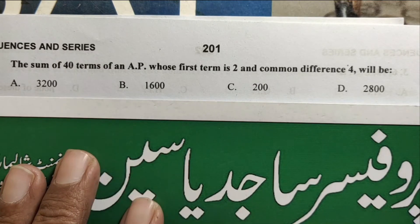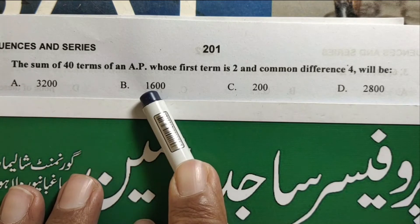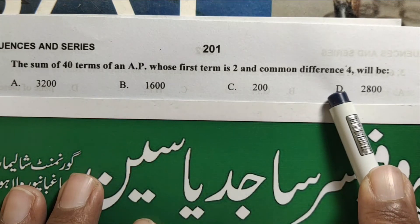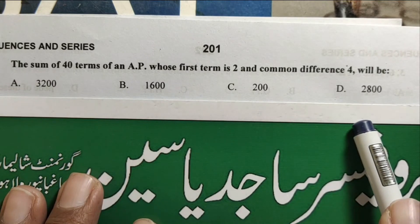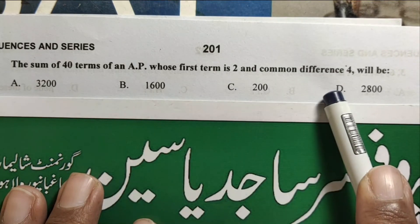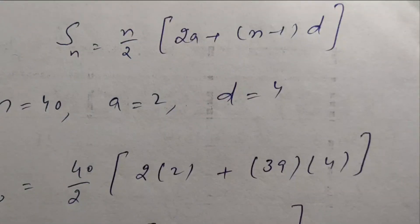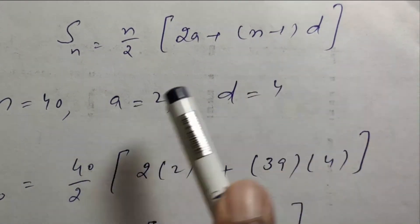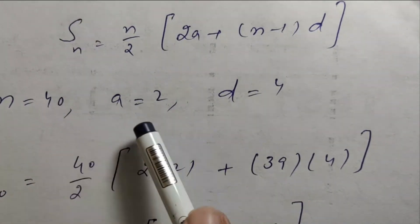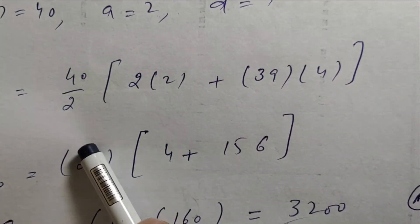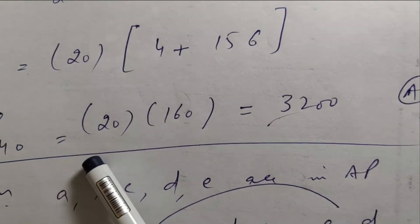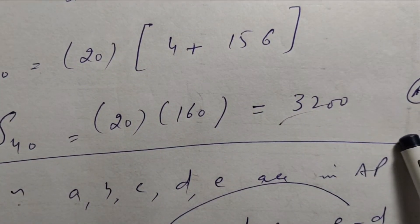The sum of 40 terms of an arithmetic progression whose first term is two and common difference is four. Using SN equals N by 2 into 2A plus N minus 1 into D: N equals 40, A equals two, D equals four. S40 equals 40 by 2 into 2 times 2 plus 39 times 4, which simplifies to 3200. Option A is correct.